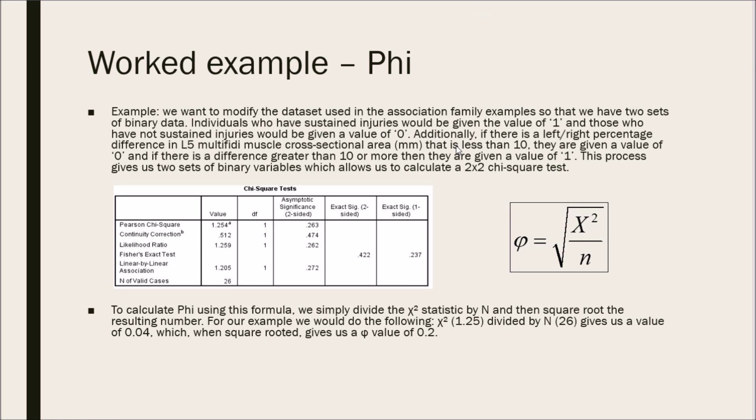For example, if we want to modify the dataset used in the association family examples so that we have two sets of binary data, the association family tutorial was part 2 of the series. Individuals who have sustained injuries would be given a value of 1 and those who have not sustained injuries would be given a value of 0. That's our two binary sets of data.